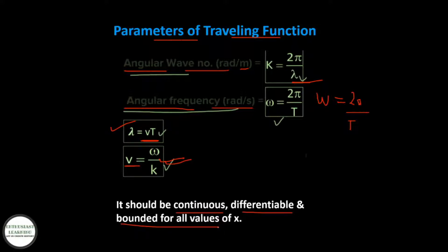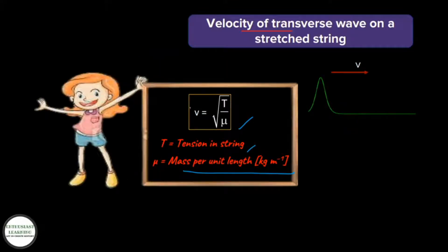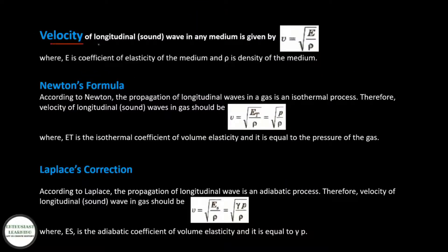Velocity of transverse waves on a stretched string is given by V = √(T/μ), where T is the tension in the string and μ is the mass per unit length (kg/m). Velocity of longitudinal waves in any medium is given by V = √(E/ρ), where E is the coefficient of elasticity and ρ is the density of the medium.